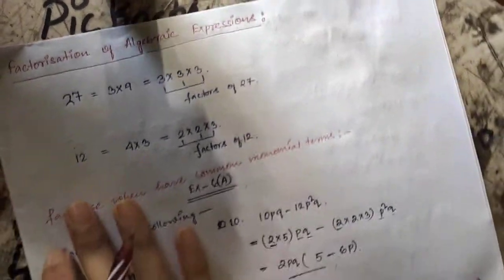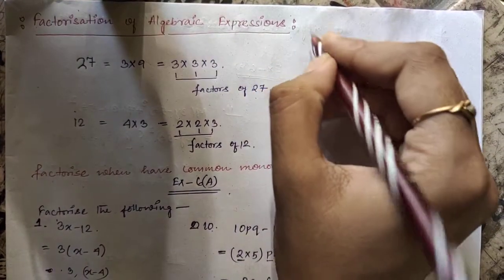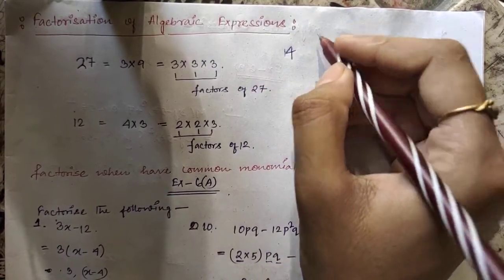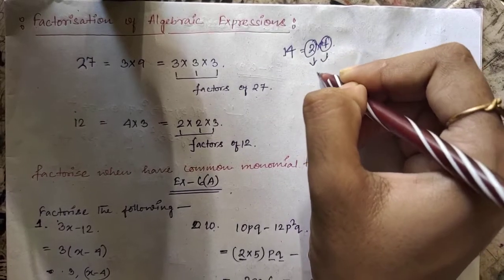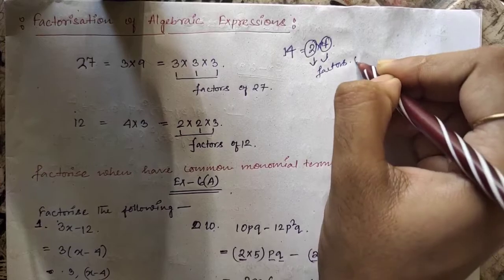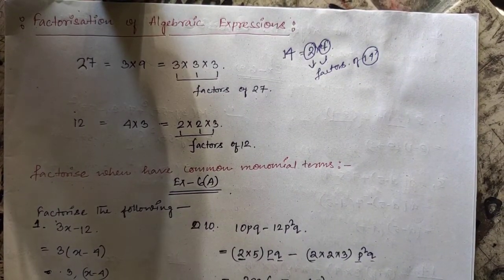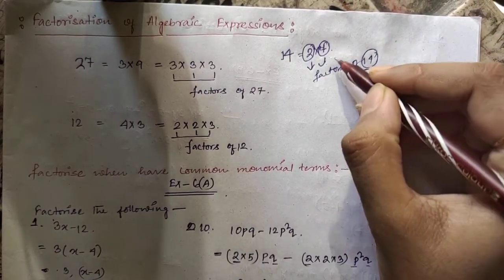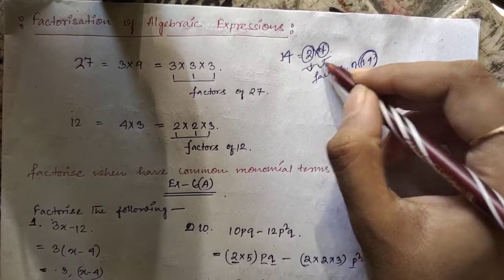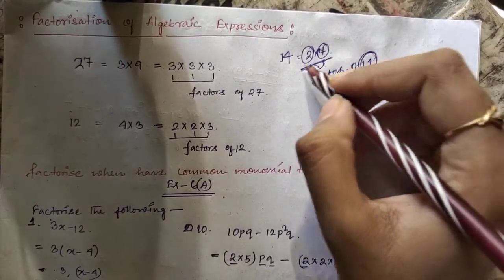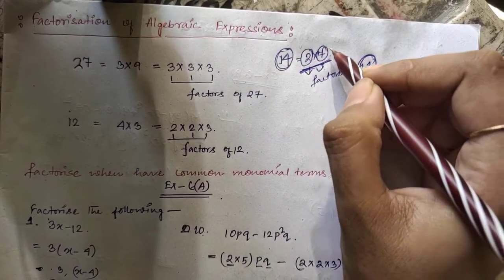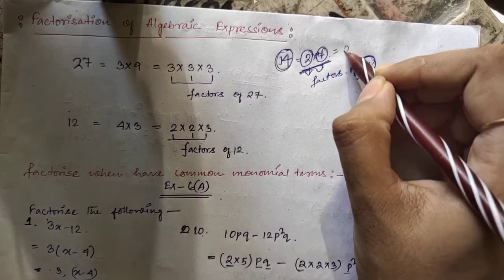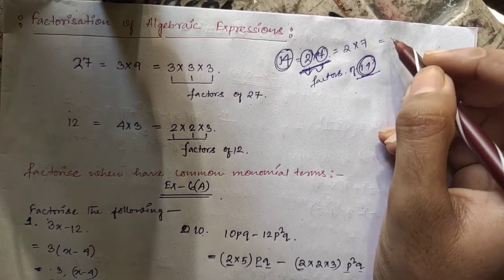In the earlier classes you learned what factors are. Suppose a number is given — say 14. The factors of 14 are 2 and 7, because 2 × 7 = 14. These are called the factors of 14. If you divide 14 by 7 or by 2, it will be divisible. Factors are the simplest form of that number. For 14, you write 2 × 7, and you cannot simplify further — these are the least factors.